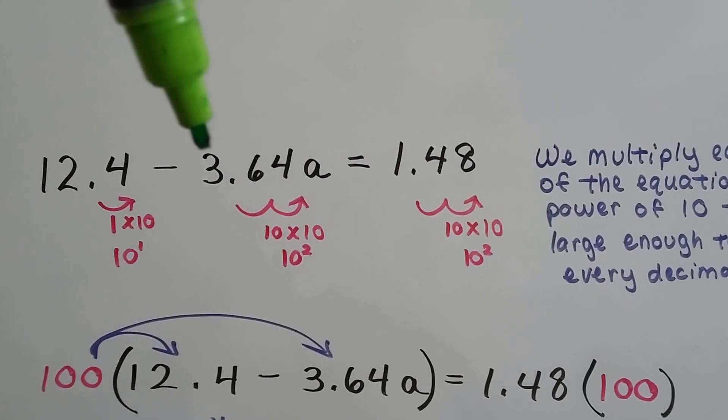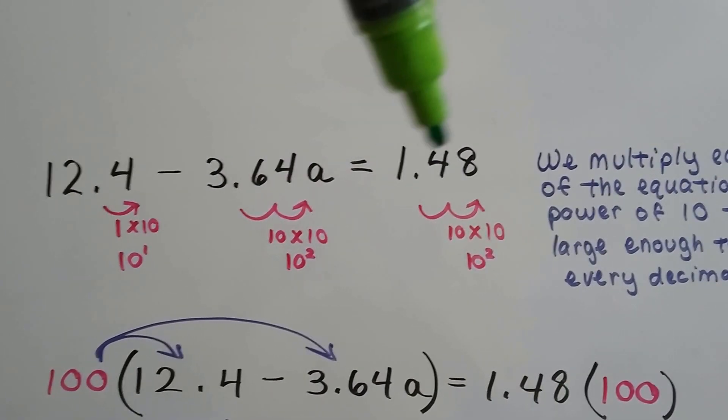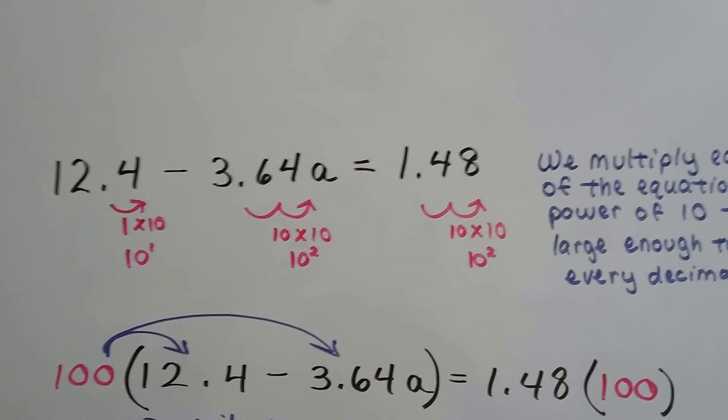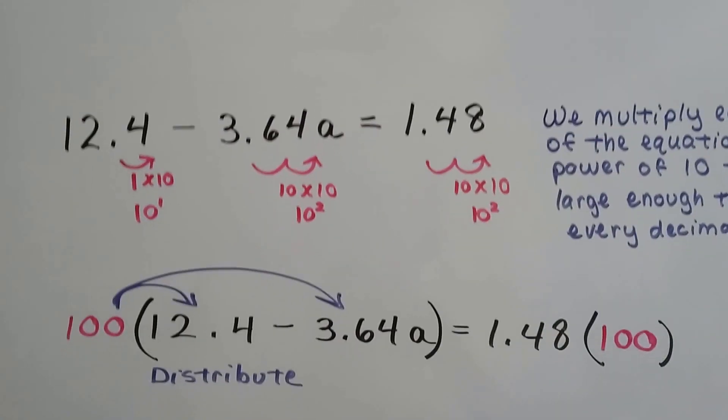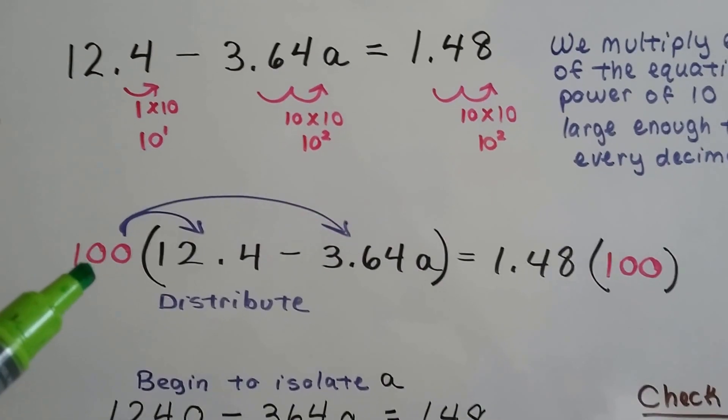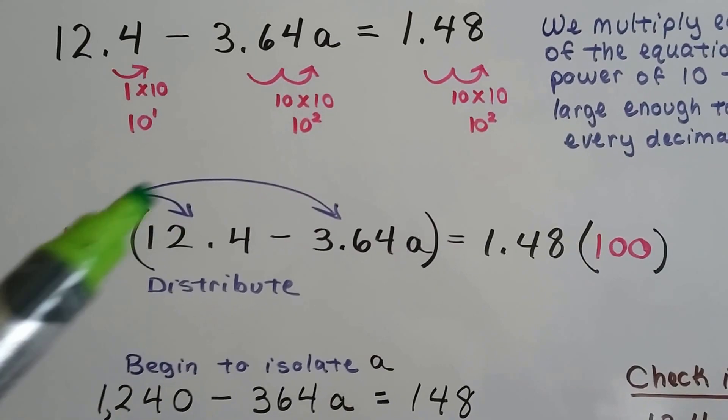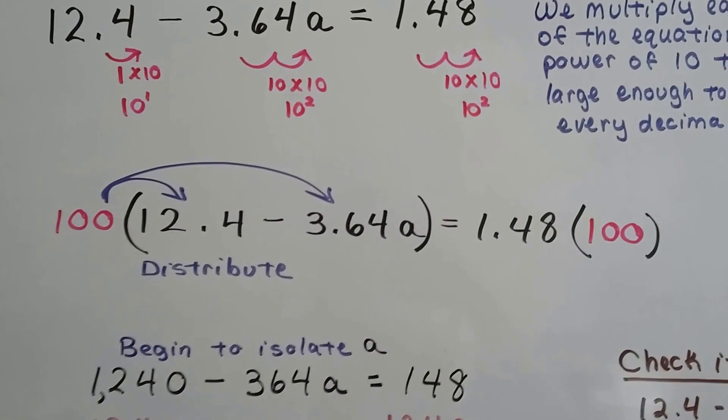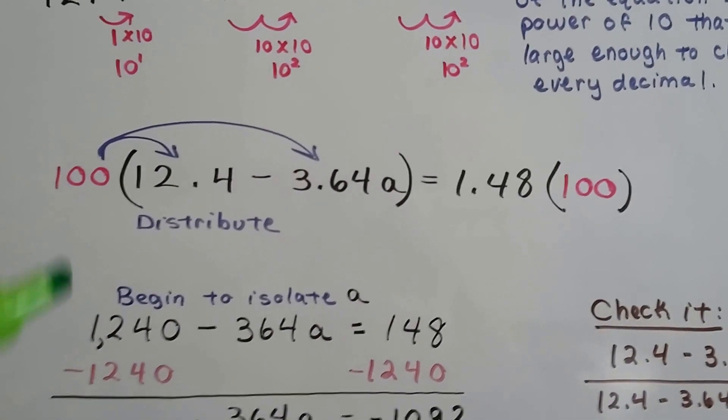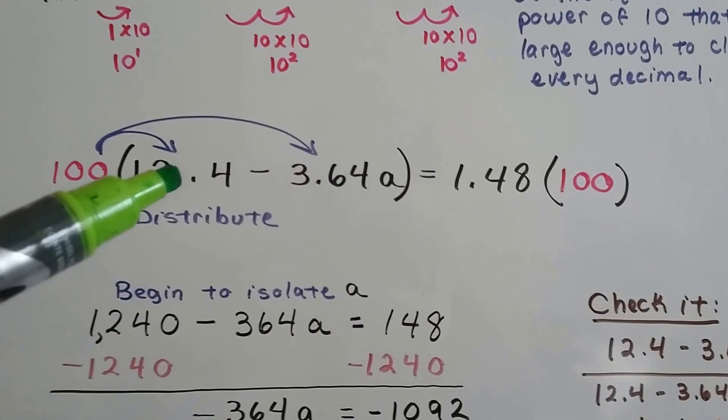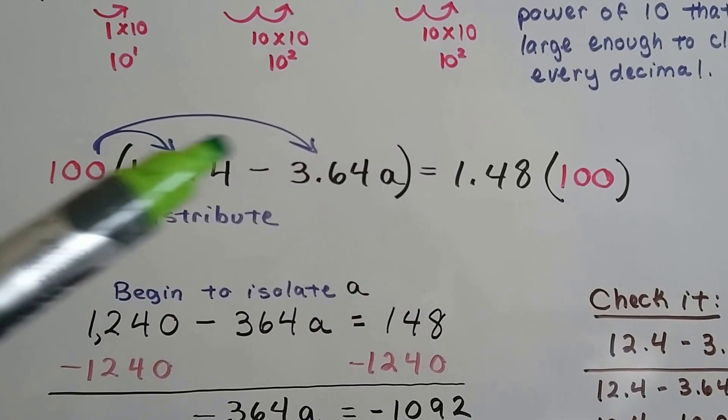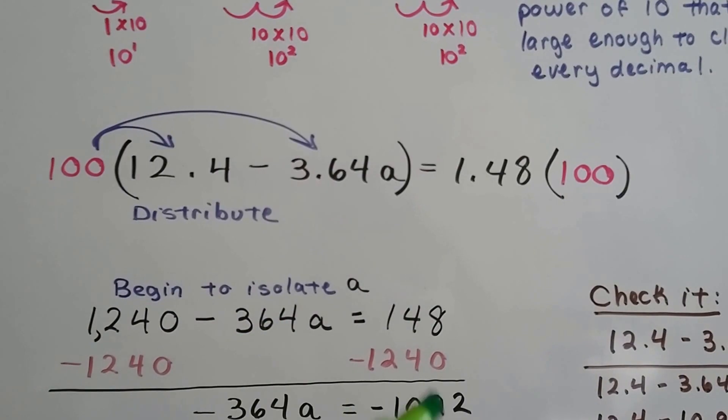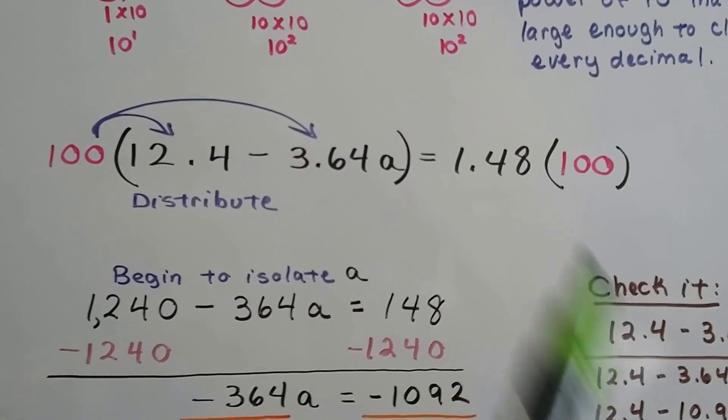That is not big enough to clear them all away. We'd end up with 36.4 and 14.8, and we'd still have decimals. So let's multiply them each by 10 to the second power, or 100. We need to distribute this to each term. So we end up with 1240 minus 364a equals 148.